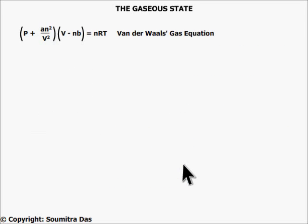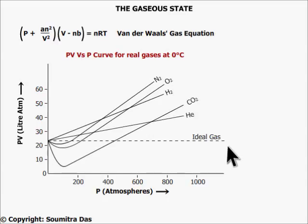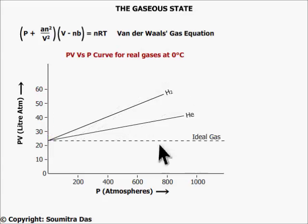Now let us see how real gases deviate from ideal behavior. We plot a curve of PV versus P at zero degrees centigrade for different gases. Ideally, it should be a straight line, but all the gases seem to deviate from ideal behavior. At very low pressure, all the gases behave ideally.